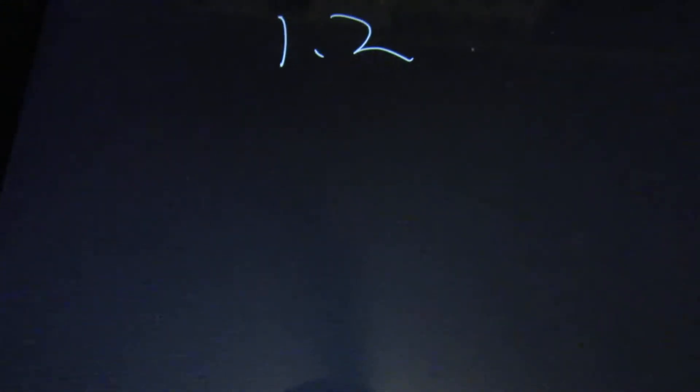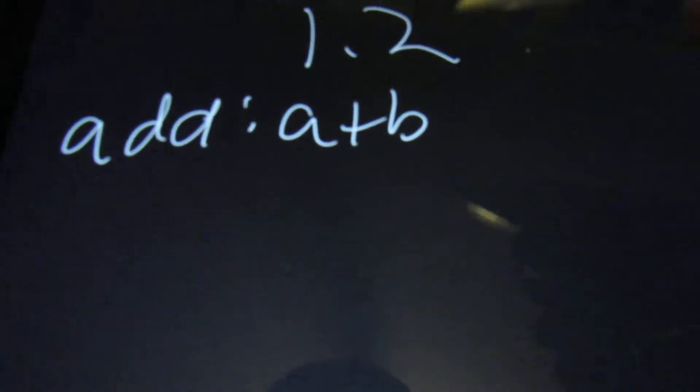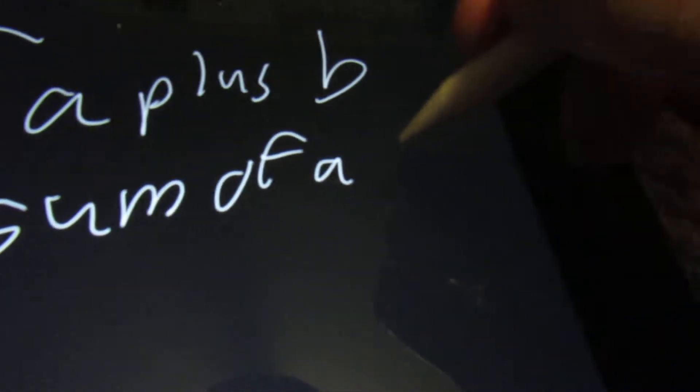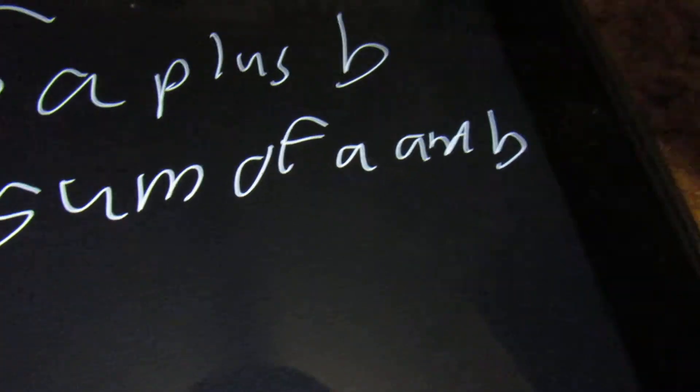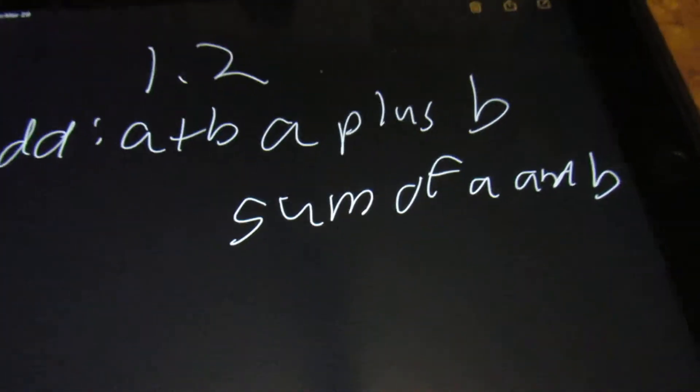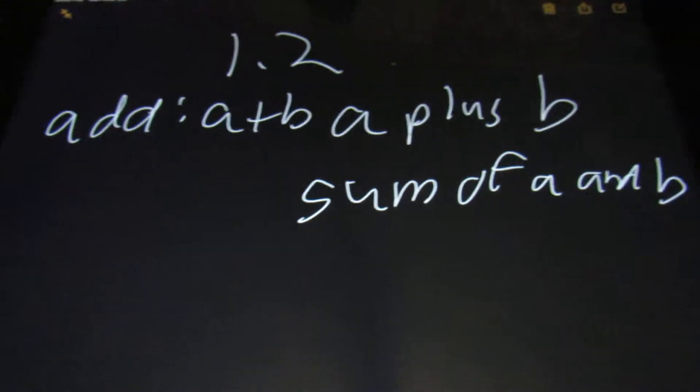There's going to be some where it changes from words to numbers or numbers to words, and you have to be able to interpret it. For addition, you're going to get something like A plus B. The way to write that out is A plus B, and it could also be the sum of A and B. Those are going to be the main two ways that you see addition written.